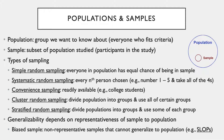In cluster random sampling, the researcher divides the population into groups — called clusters or blocks — and then uses all members of certain randomly selected groups. For example, if a researcher were interested in course evaluation scores, they might randomly select five classes from each department at a university and look at their course evaluation reports.